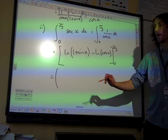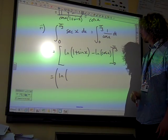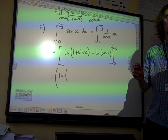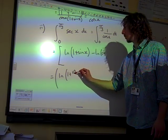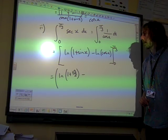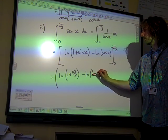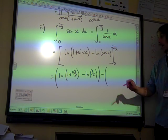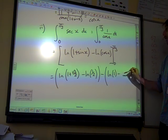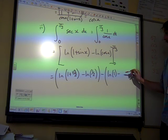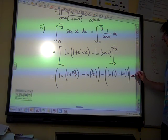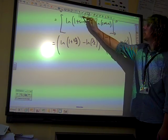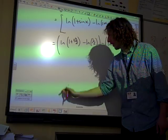If we put in pi by 3, we've got the natural log of 1 plus sine of pi by 3. Well, that sine of pi by 3 is root 3 over 2. Minus the natural log of cos pi by 3, 1 over 2. And we're subtracting what we get if we put 0 into that. Sine of 0 is 0, so that's ln 1. Cos of 0 is also ln 1. Have I got too many brackets in there? No.